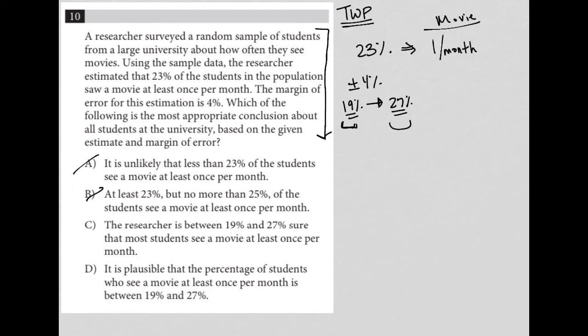Choice C, the researcher is between 19% and 27% sure that most students see a movie at least once per month. Now this is pretty tricky. So we see our numbers, but these numbers have to do with the percentage of students that see a movie at least once a week. Not with how sure the researcher is. These percentages have nothing to do with how certain the researcher is. So choice C for that reason is gone.